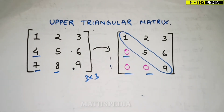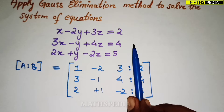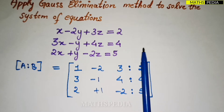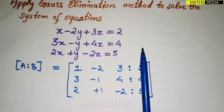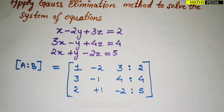In our augmented matrix, if you observe the 3×3 part, we need to make the elements 3, 2, and 1 (below the diagonal) equal to zero in order to convert it into upper triangular form. We'll see later why we need to do this conversion. We perform row operations, and we'll start by making 3 as zero.